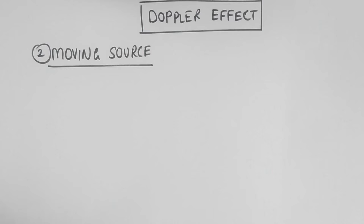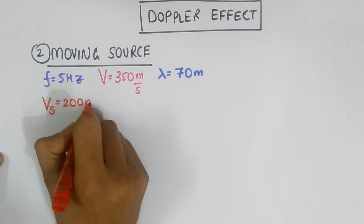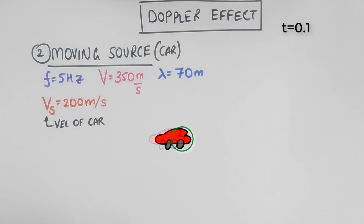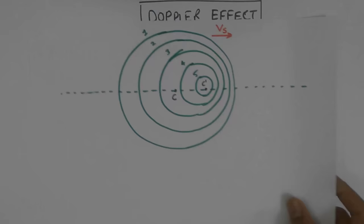Now imagine the same car producing the same sound is moving towards the right at a tremendous speed of about 200 meters per second. Let's look at the animation of this. Compare this with the previous picture and you'll notice some differences. Here I have drawn the new situation.